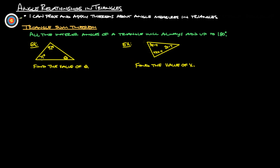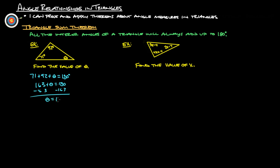Here are a couple of examples. We've got these two angles and we're trying to figure out the third angle. Let's find the value of theta — that's a variable we often use when looking for an unknown angle. We know all three have to add up to 180, so we take 71 plus 92 plus theta equals 180. Adding those gives us 163 plus theta equals 180; subtract 163 from both sides, and we get theta equals 17. So this last little angle is going to be 17 degrees.